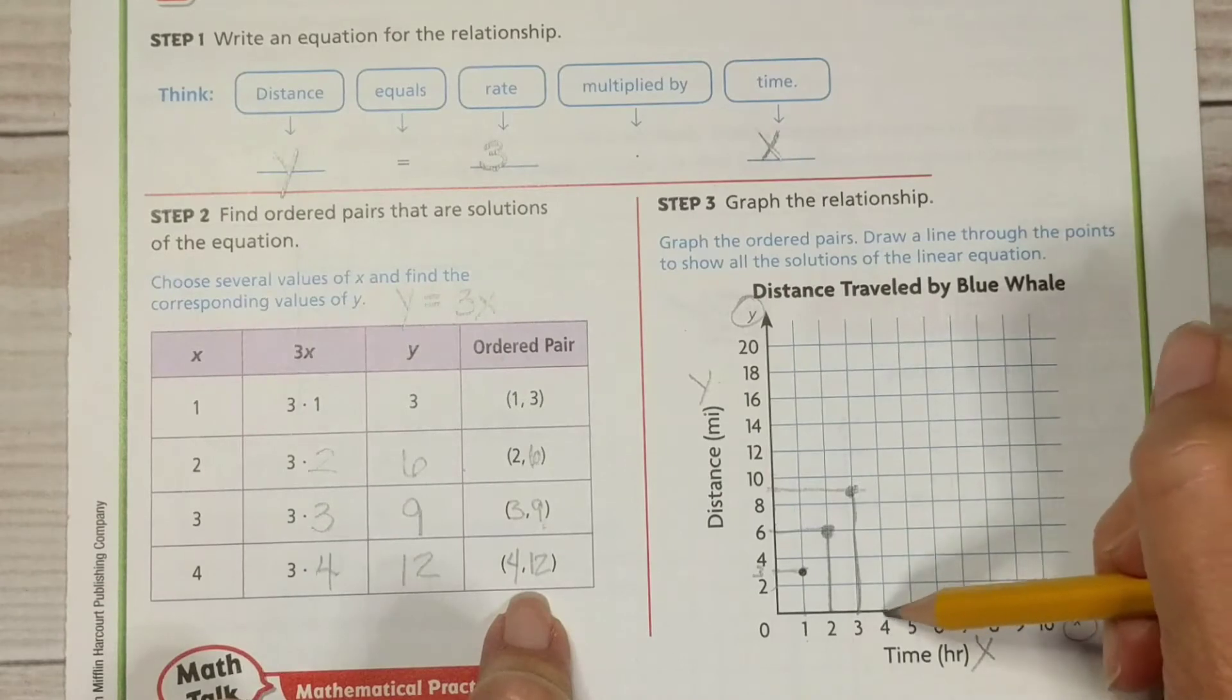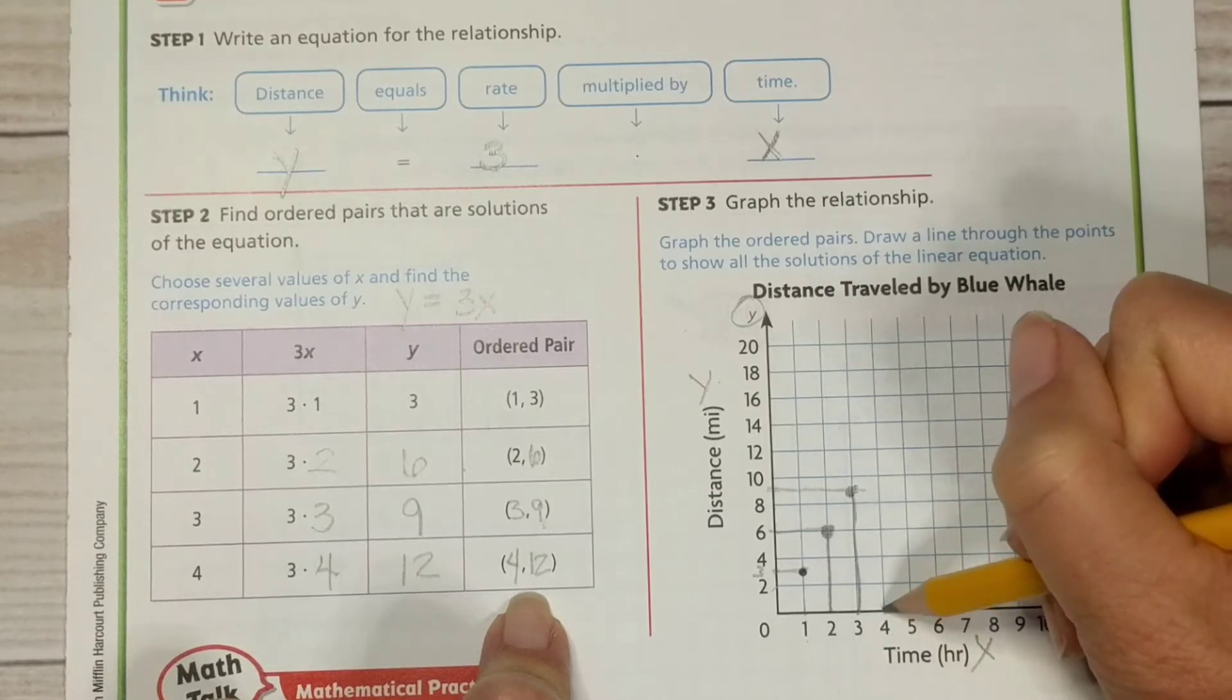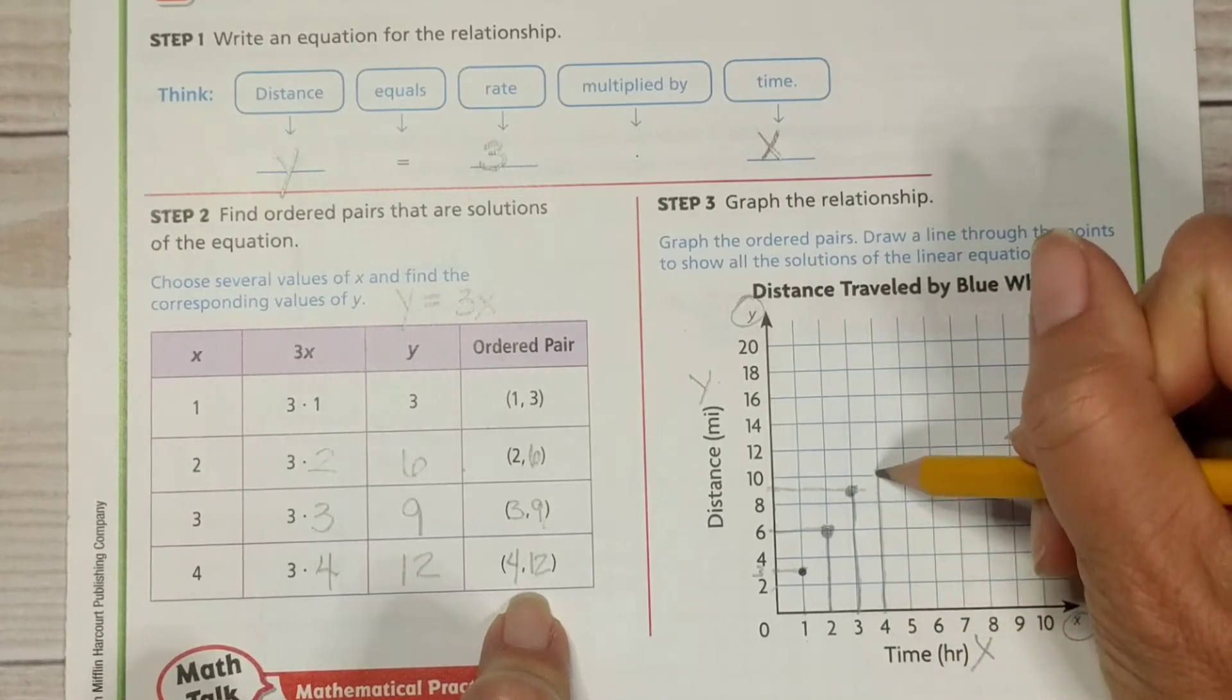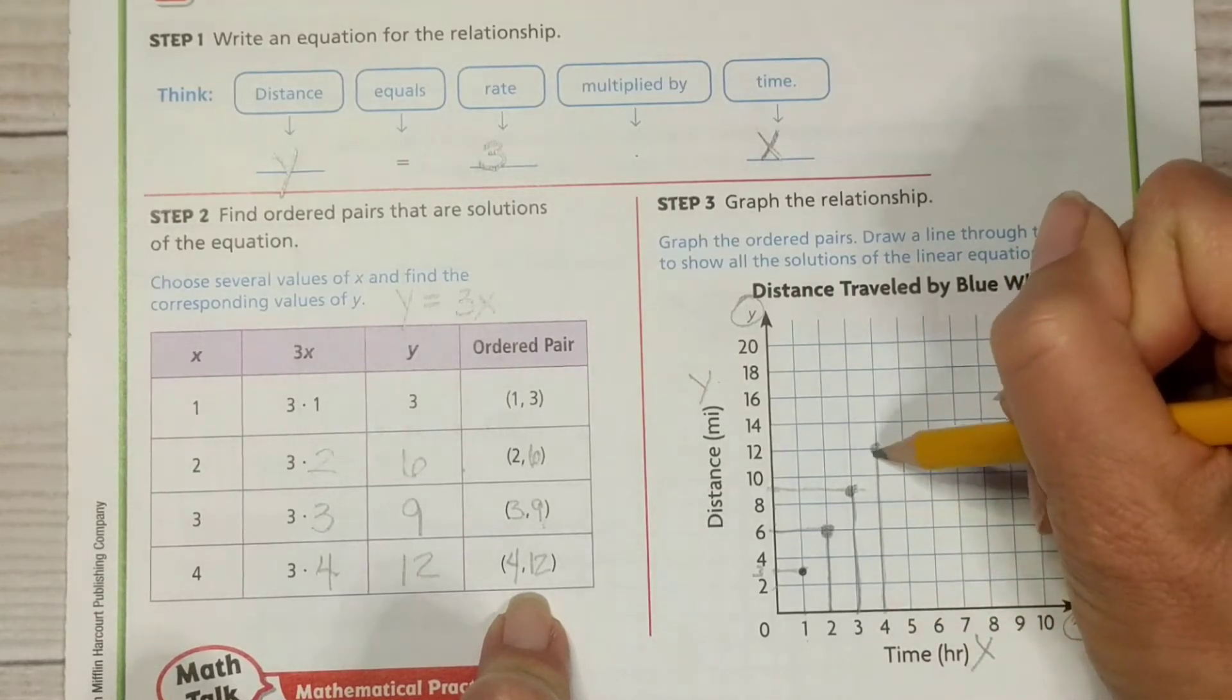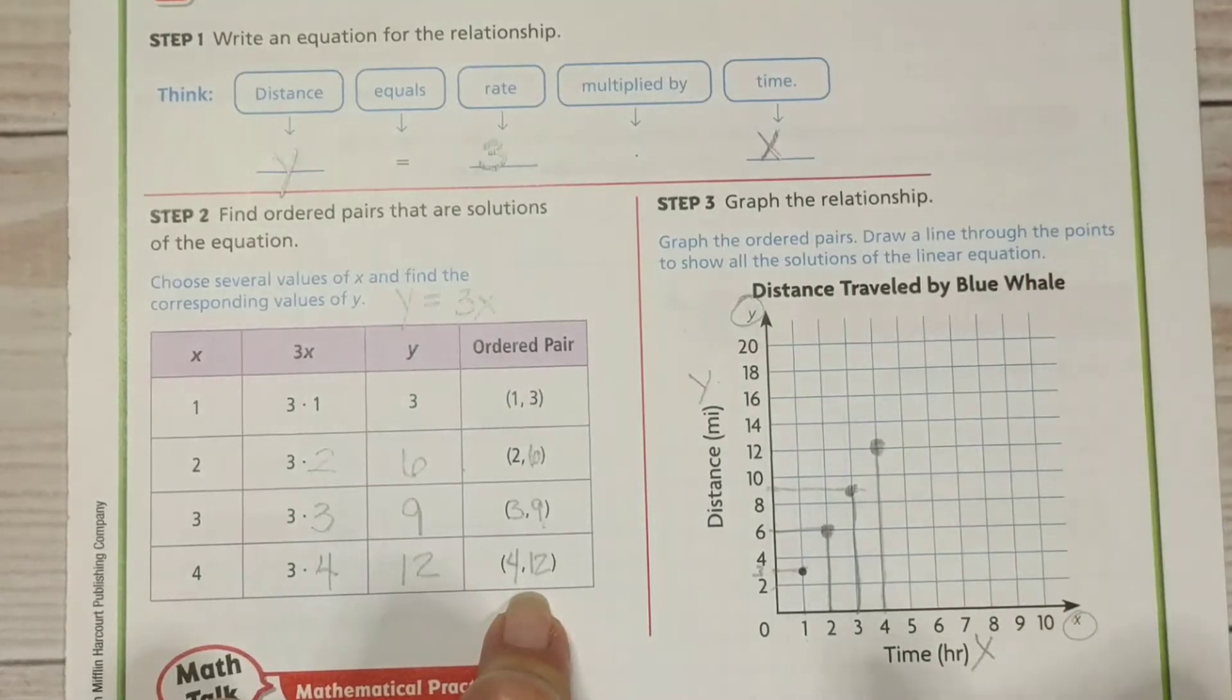All right. Let's go on up to 4, 12. So we're starting at 4. Go up to 12 right there and put a dot.